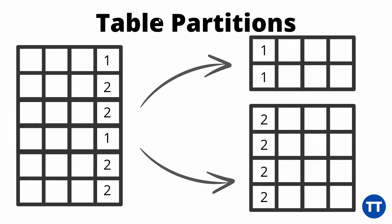To continue on our example, let's take a look at this table here and at this column that we have here with the numbers. Let's assume that this is our partitioning key, and we partitioned the table by a list where values that have one in this partitioning key column go to one partition, and values that have two go to another partition.